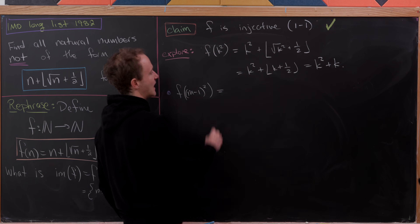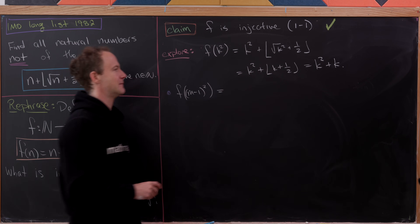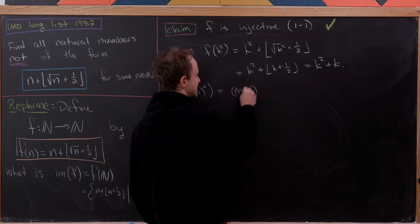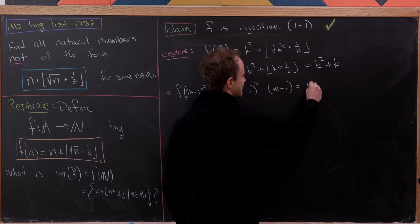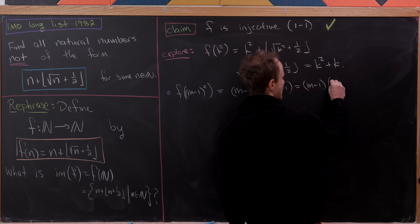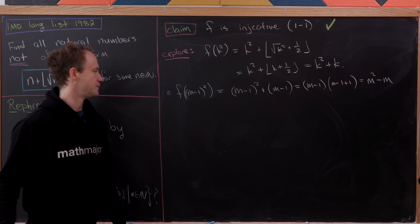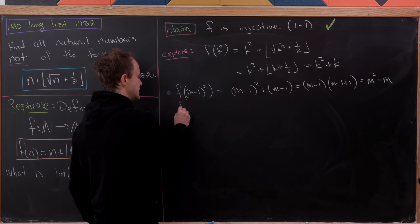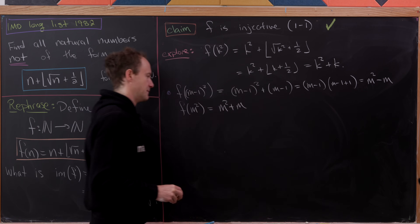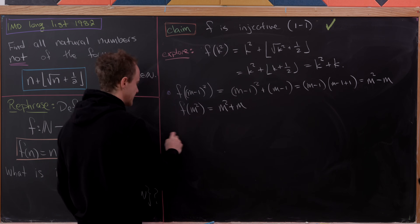Now we evaluate f at two consecutive perfect squares. Using the formula for perfect squares: f((m−1)²) = (m−1)² + (m−1) = (m−1)(m−1+1) = m² − m. And f(m²) = m² + m.